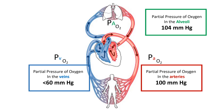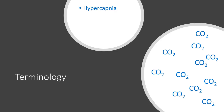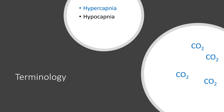You should be able to assign a partial pressure of oxygen value to its location: alveolus (~104 mmHg), arterial (~100 mmHg), or venous (less than 60 mmHg). For carbon dioxide terminology: hypercapnea means excessive CO2 levels; hypocapnea means lower than normal CO2. Low oxygen levels are referred to as hypoxia.